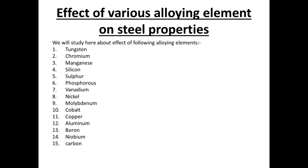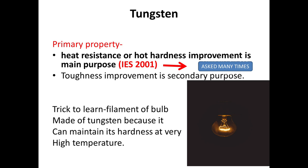I have taken these properties from standard books, because a lot of books are there that usually confuse you by providing many properties pertaining to a single alloying element. So we will discuss the main properties only. The first element is tungsten — tungsten basically provides heat resistance or hot hardness; this is the primary property of tungsten.